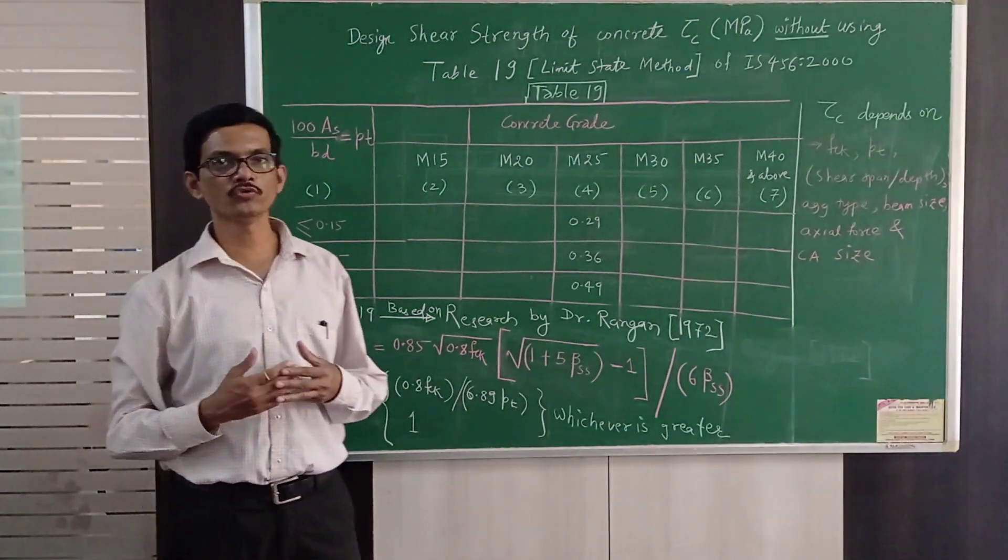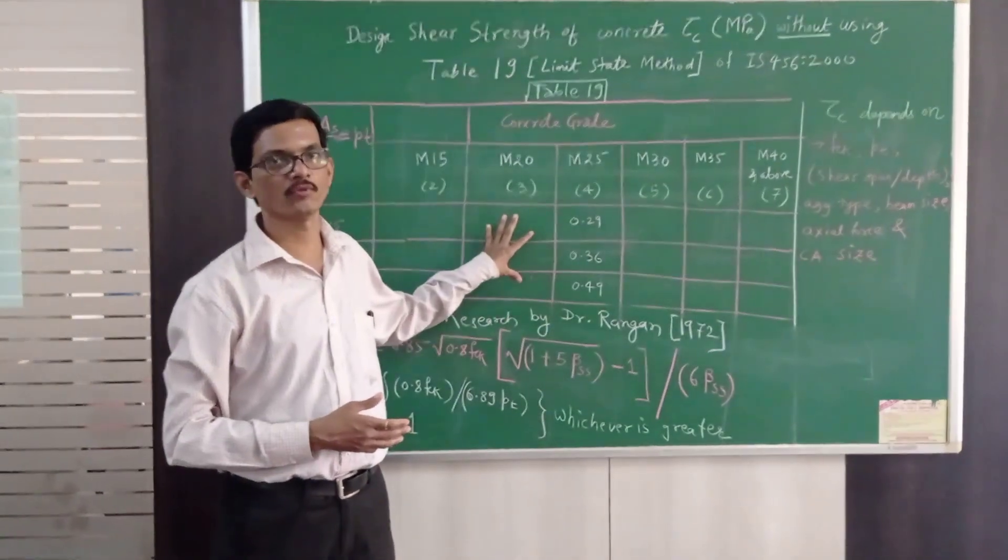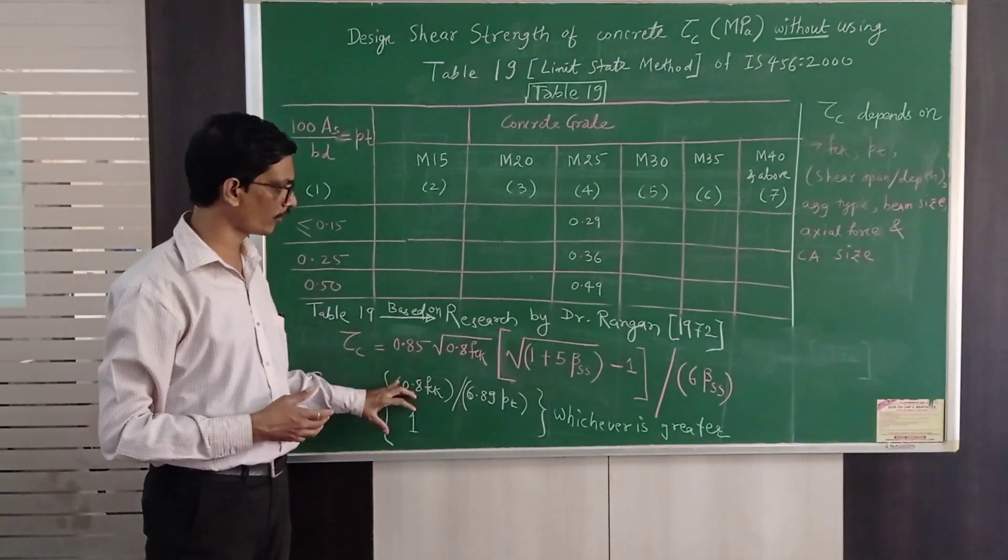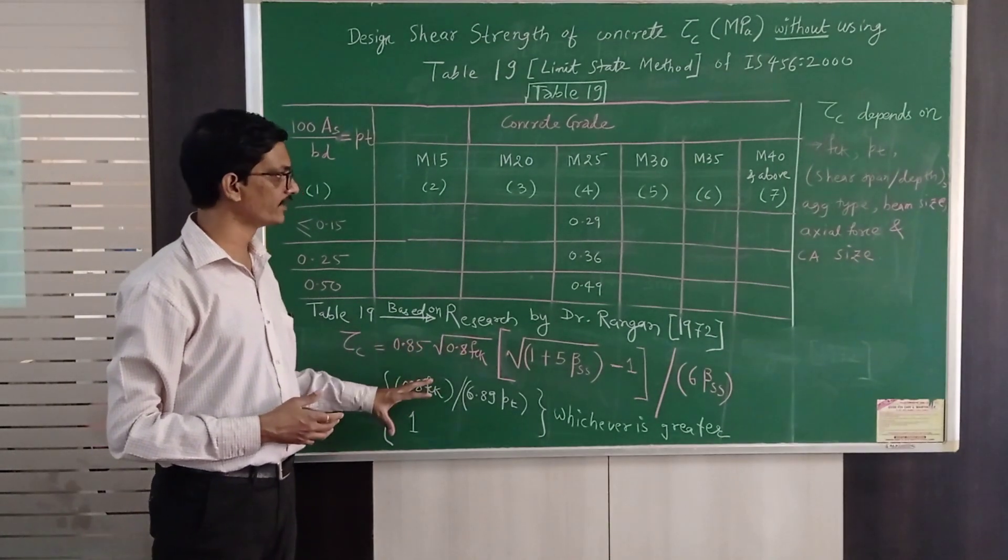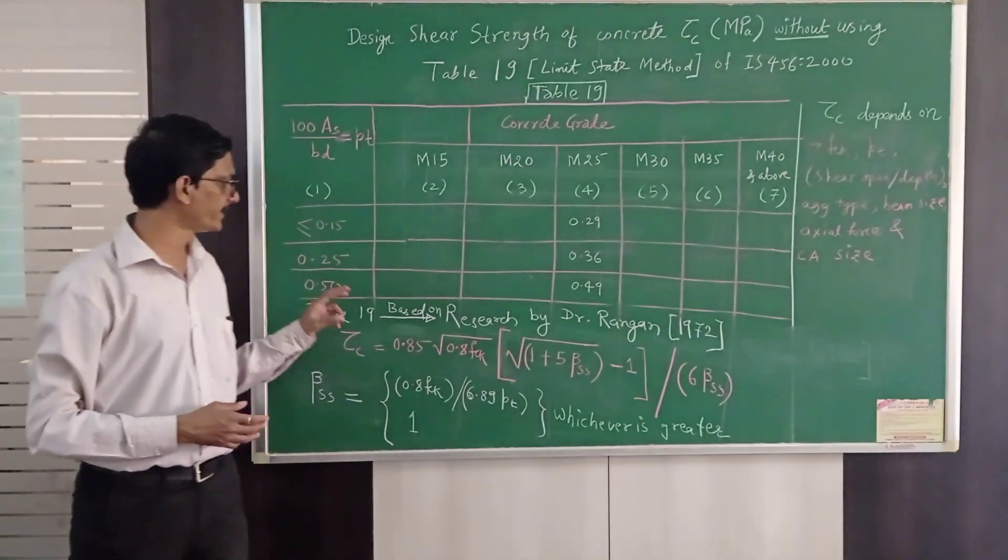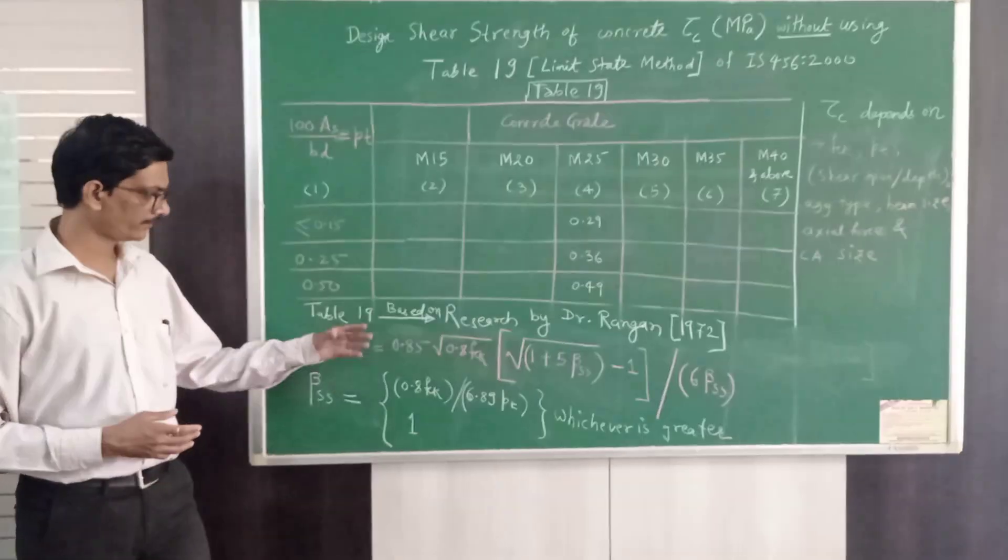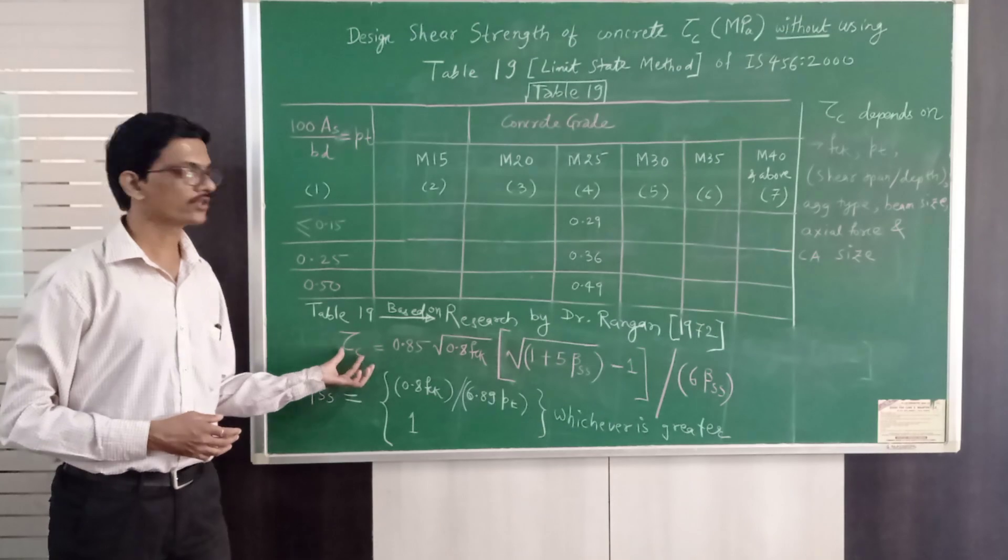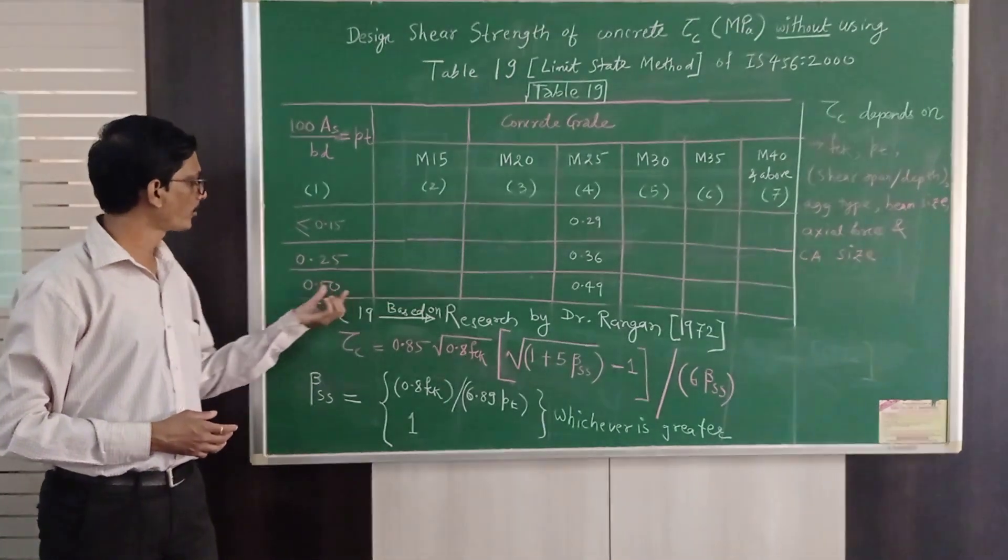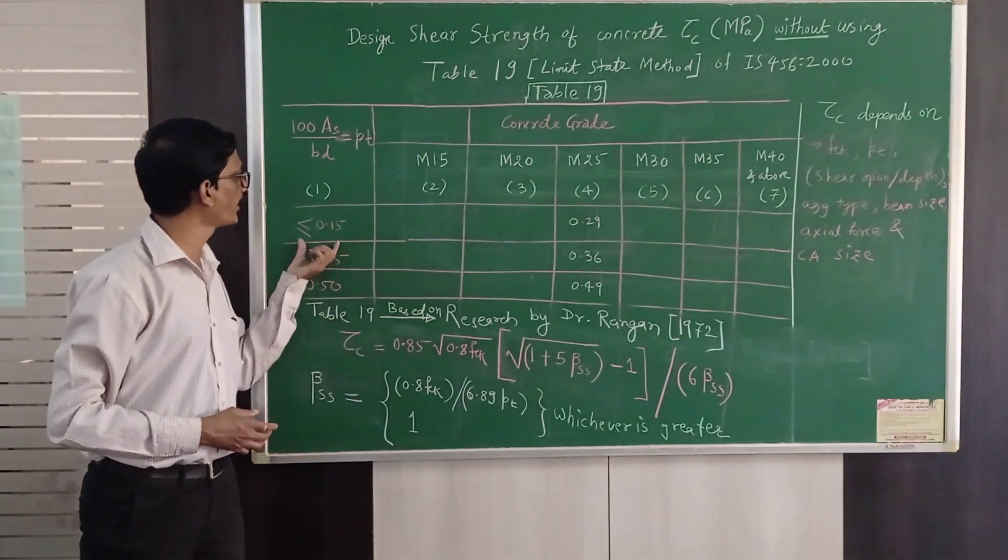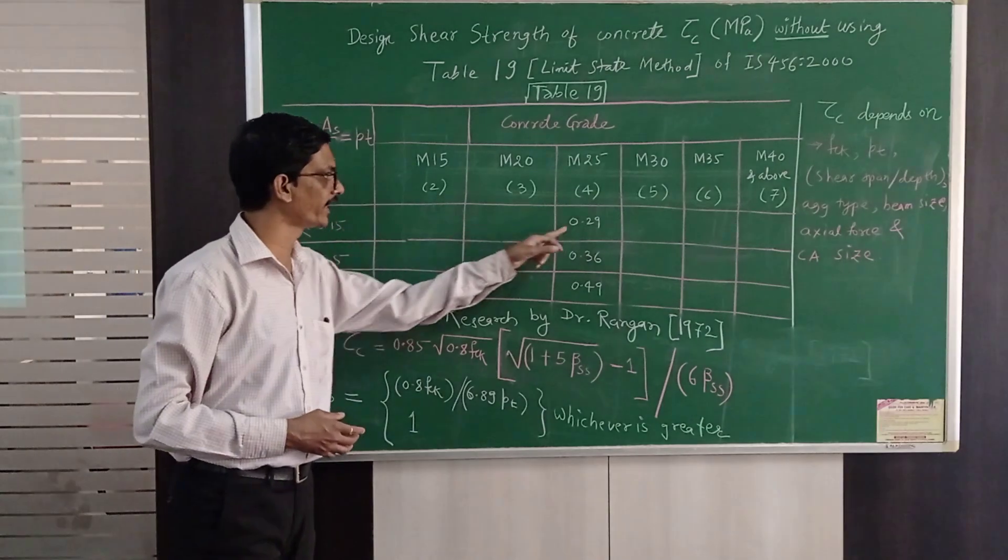That means I do not need to use any table at all while solving. Directly if I remember these two formulae and underlying conditions, directly for any random pt percentage I can get the value of tau c. Because while using table if our pt percentage is 0.5, 0.25, 0.15 then it is okay directly we can read.